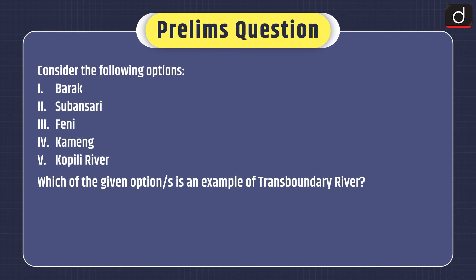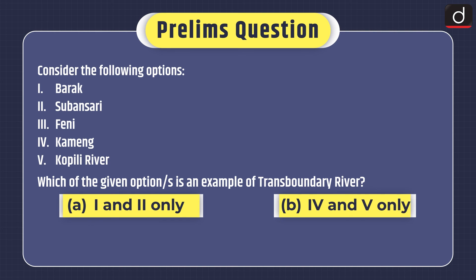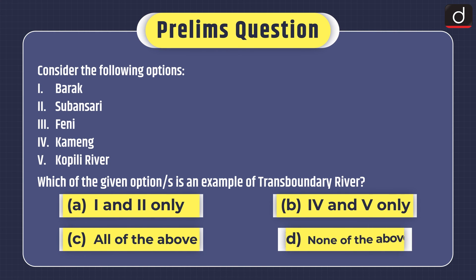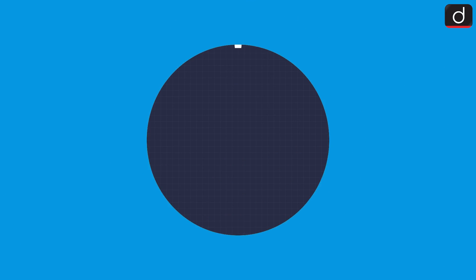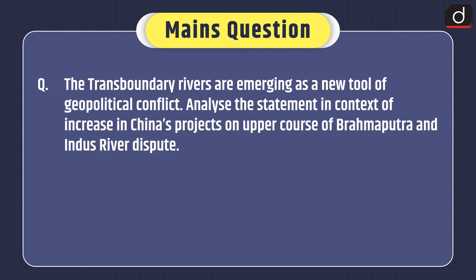Now for practice questions. Prelims question — consider the following options: 1. Bharali, 2. Subansiri, 3. Faini, 4. Kameng, 5. Kopili river. Which of the given options is an example of a trans-boundary river? Options: 1 and 2 only; 4 and 5 only; all of the above; or none of the above. You can send the answer in the comment section. Mains question: Trans-boundary rivers are emerging as a new tool of geopolitical conflict. Analyze this statement in the context of increasing China's projects on the upper course of the Brahmaputra and the Indus river dispute.